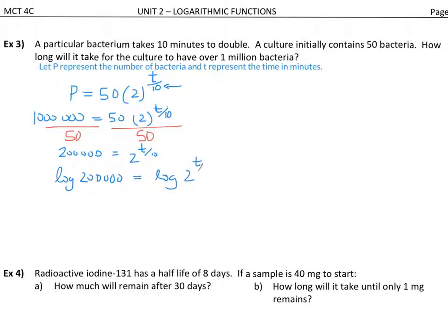And then apply that power law of logs. So we would have on this side, instead of the exponent of T over 10, that comes down and multiplies the log of 2, logarithm of 2. At this point, we have a divide by 10 here. So I could multiply this side by 10 to undo that, which then means I have to multiply this side by 10. So that 10 and that 10 undo each other. And then we've got 10 times the log of 200,000 is equal to T times the log of 2.